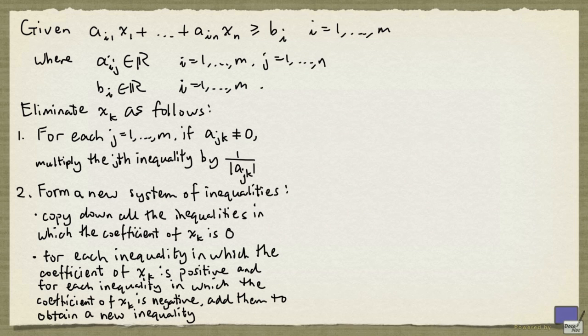So the version of the Fourier-Motzkin elimination that we are going to look at deals with greater than or equal to inequalities. So I assume that we are given a system of m inequalities of this form. We can eliminate xk by doing the following.